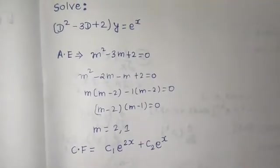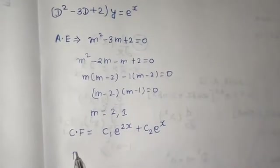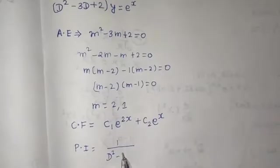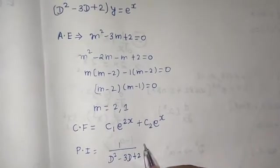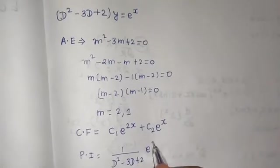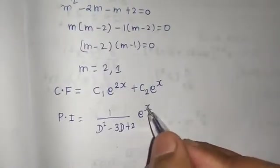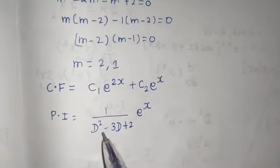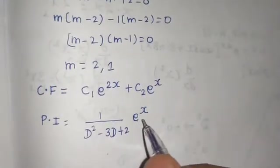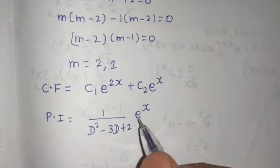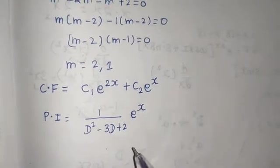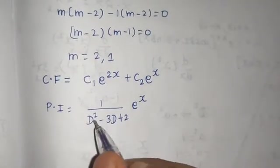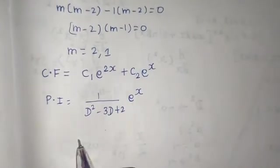Okay, now coming to the particular integral. So particular integral is always 1 upon f(D), which is here D² - 3D + 2, operating on e^x which is your RHS. Now how to solve when it operates on e^(ax)? So just replace this D by a. So here, in place of a in e^(ax), in place of a we have 1, e^(1x), so a here is 1, so just replace this D which you are seeing by 1.